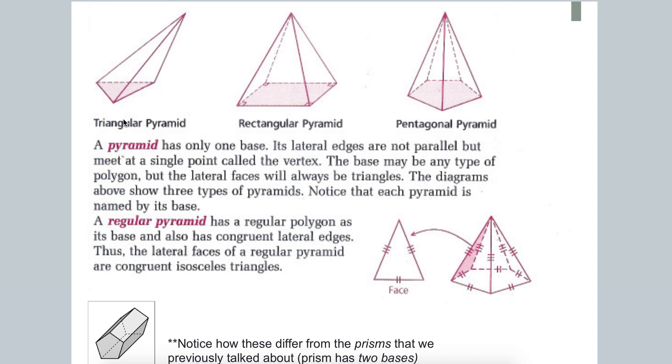We call this a triangular pyramid because its base is a triangle. We call this a rectangular pyramid because its base is a rectangle, pentagonal, and so on.